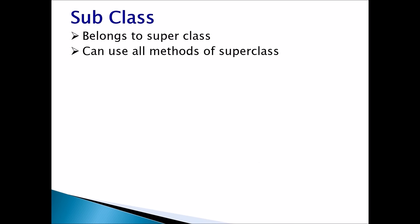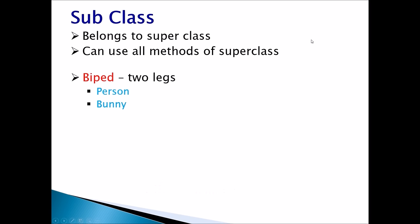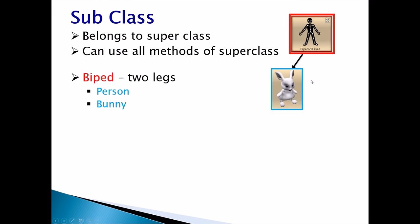Subclass: These subclasses belong to a superclass and they can use all the methods of a superclass. Biped is a superclass. When we talk about a biped object, that means any object that has two legs — for example, a bunny and a person.